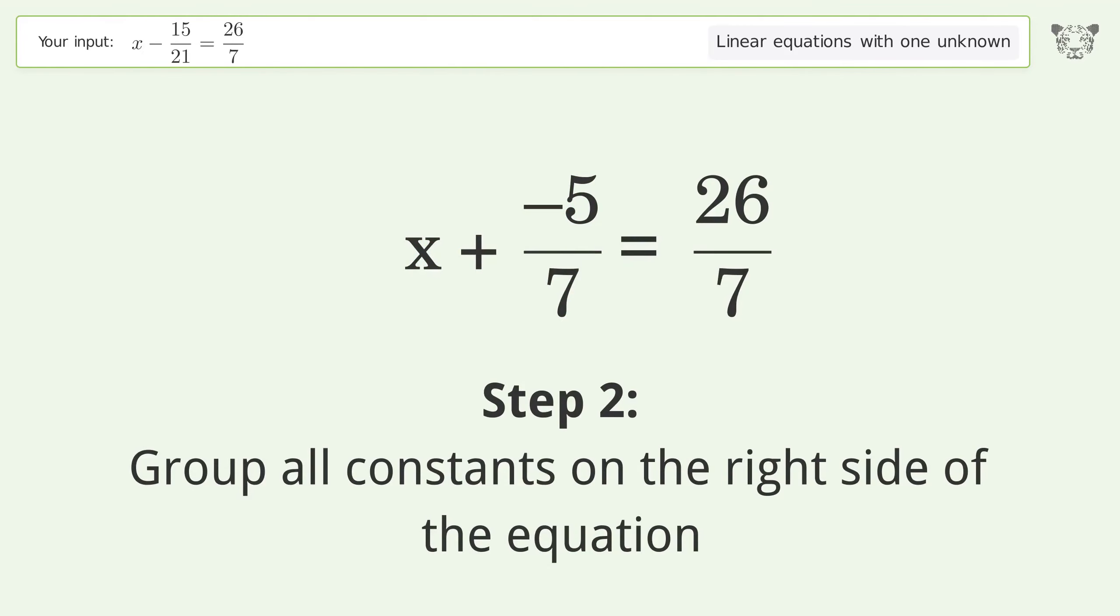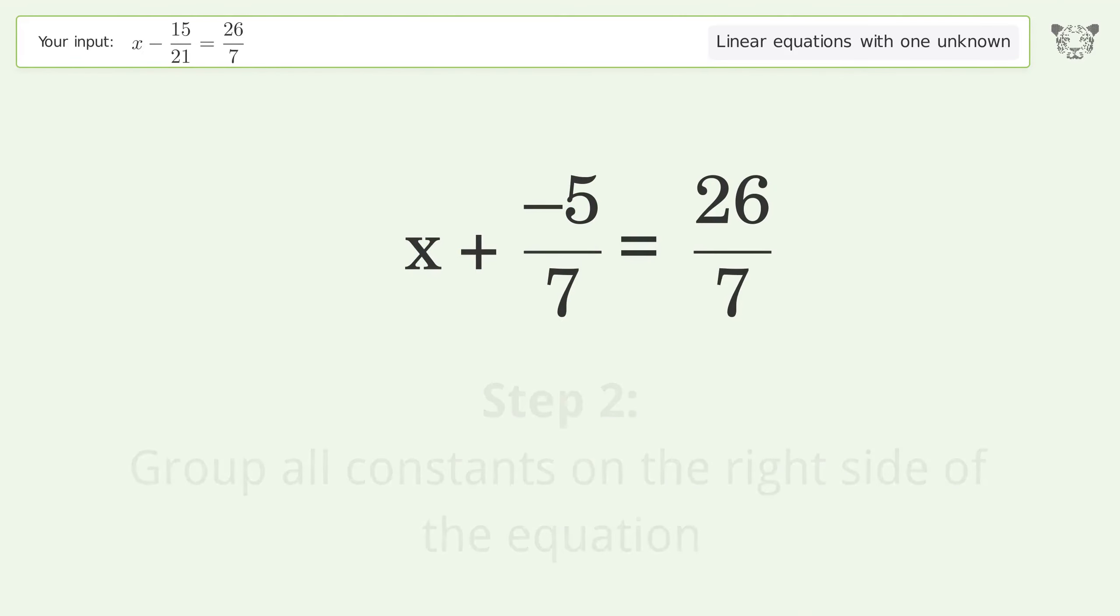Group all constants on the right side of the equation. Add 5 over 7 to both sides.